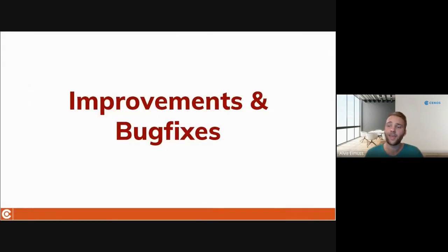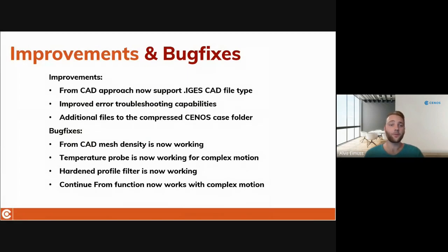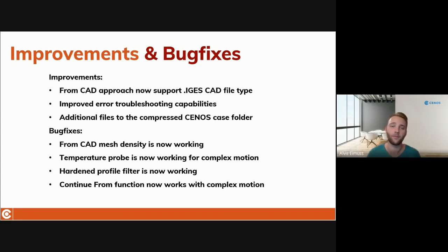Alongside the large updates we have also had some minor ones, including bug fixes. We have improved the CAD file support in the From CAD approach, which now supports IGS CAD file extensions. We have also improved our error troubleshooting capabilities by adding additional crash dump files which are written out of CENOS in case your simulation crashes, which will help us find the problem faster. Previously, From CAD mesh density was not working, which is now fixed and you can adjust the fineness of your automatically generated mesh without any problems.